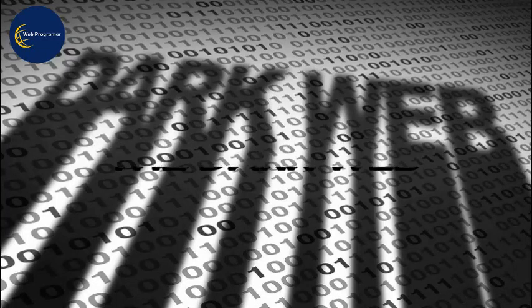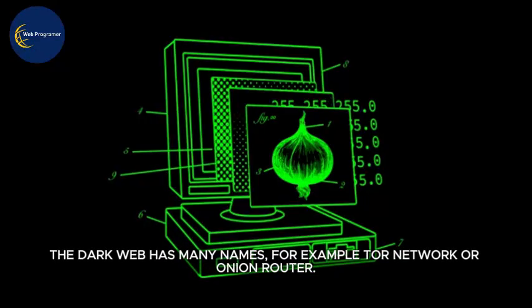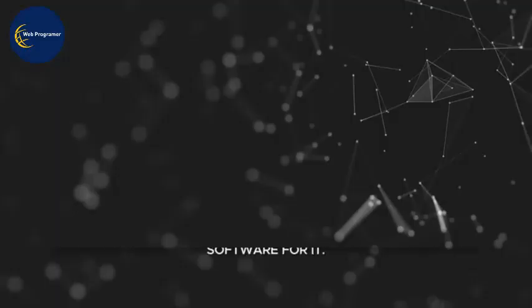The dark web, also called the dark net, is a network within the internet which is only accessible using certain software and protocols. The dark web has many names, for example, Tor Network or Onion Router.